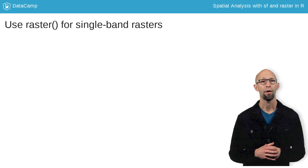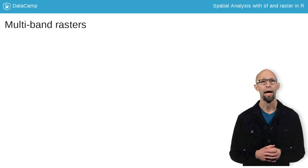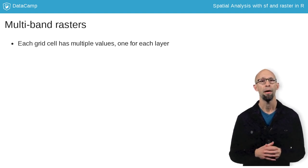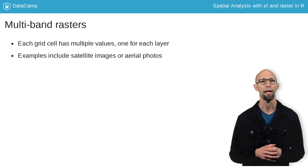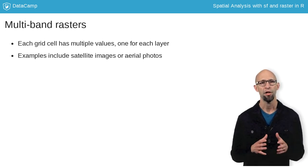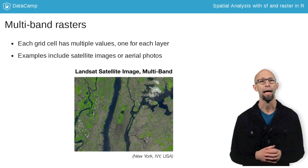Here you can see that for a single band raster, you'd use the raster function. With multiband rasters, on the other hand, there may be multiple layers, meaning each grid cell may have multiple values. Examples include satellite images where each band represents ranges of frequencies along the electromagnetic spectrum. In a true color satellite image — an image that looks like a photo — you would have three bands, one each for red, green, and blue bands of light.